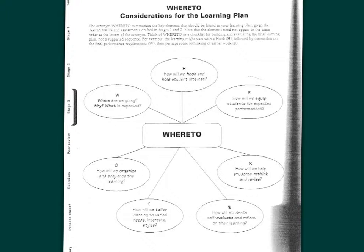WHERE TO stands for various components. The W is 'Where are we going, why, and what is expected?' We have to think about the ways we help students understand why we're doing this and what they need to do. This could mean helping them understand the standards and learning goals, or the expected tasks and engagement in the course. Students need to know the where, the why, and the what — otherwise the first thing they'll ask is 'why am I doing this?'